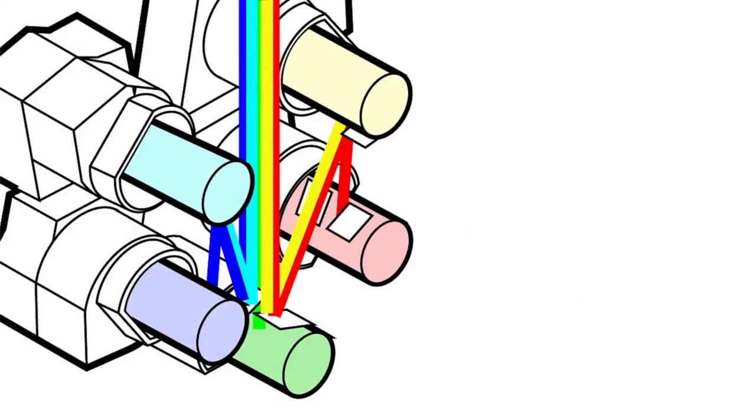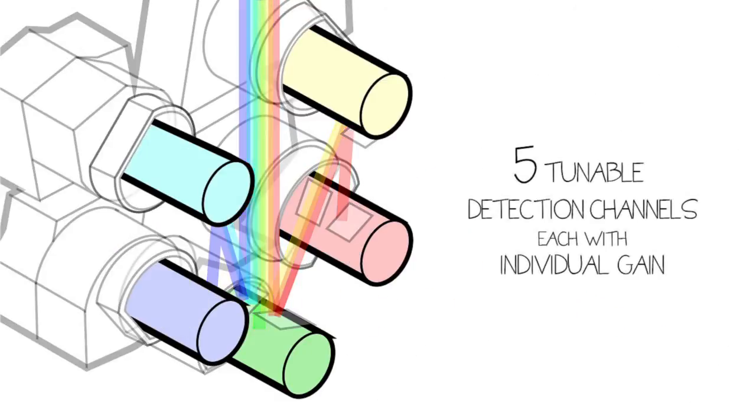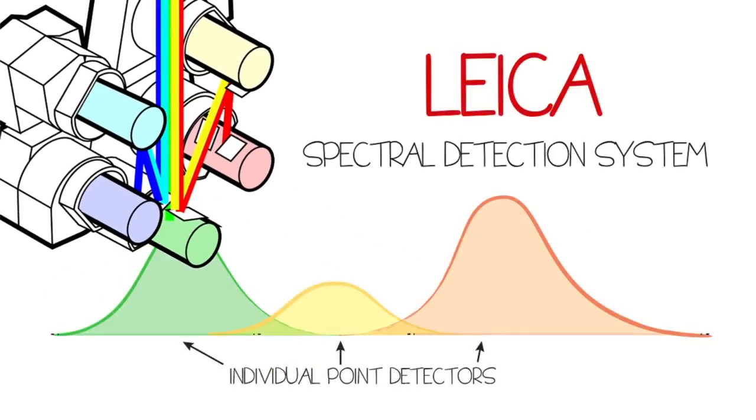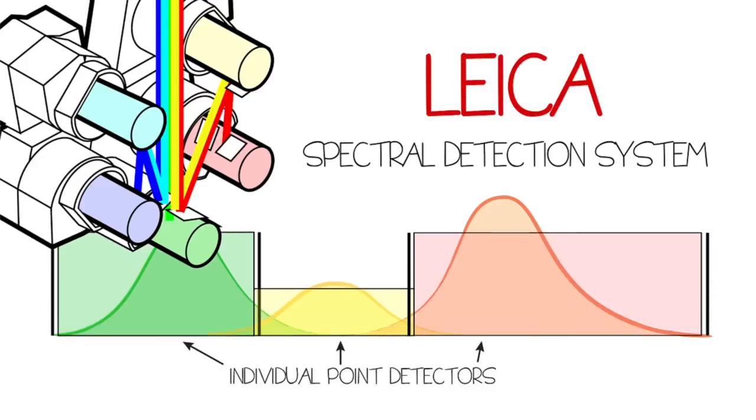Leica's prism-based spectral detection provides 5 independent detection channels, each with individual gain for optimal dynamic range. By adapting to your sample's unique profile, a Leica confocal ensures that every detail is captured for imaging.